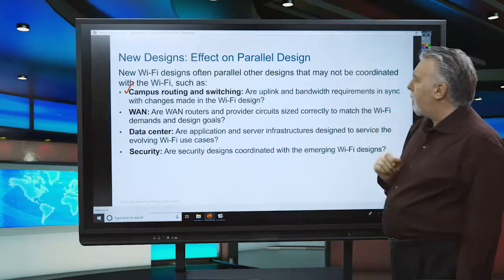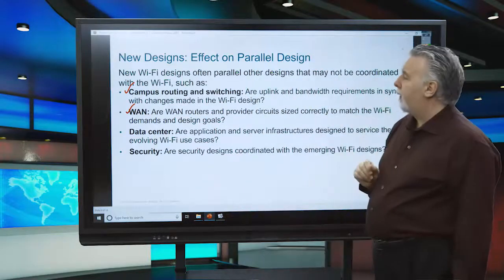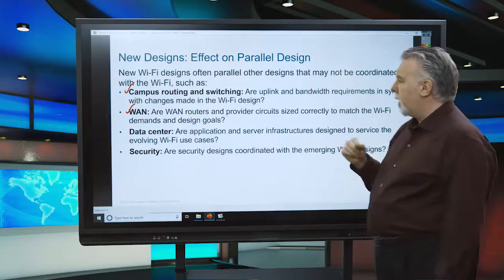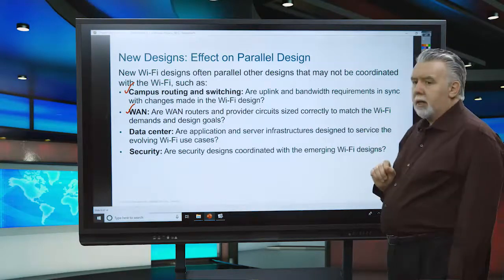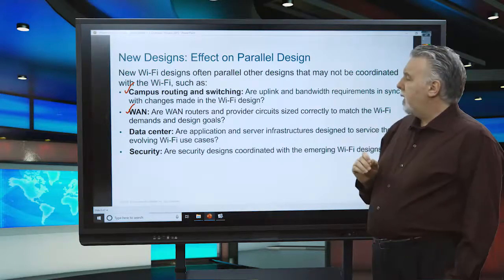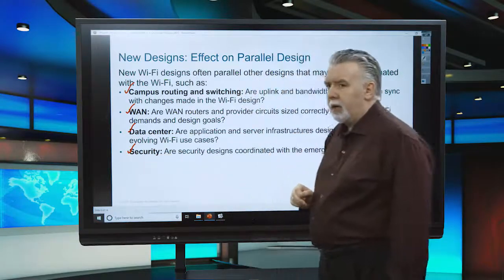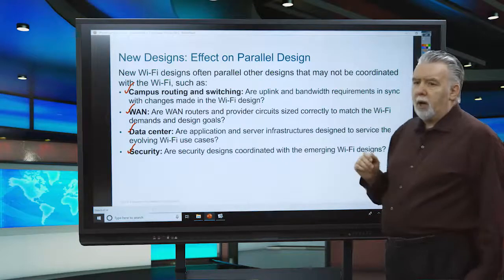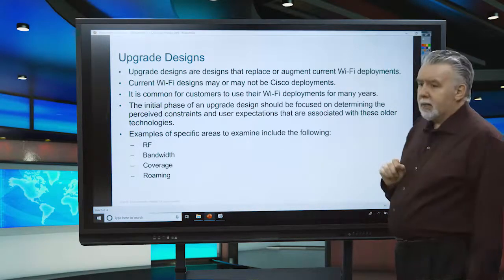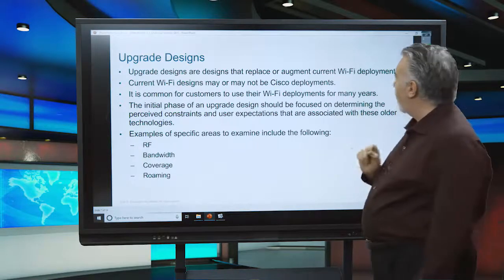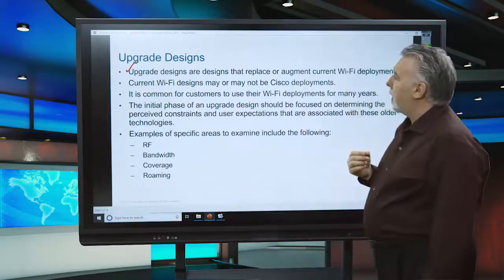Consider what impact the Wi-Fi will have on the campus routing and switching. For example, if you have a remote office with APs but no local wireless LAN controller, how is that going to influence the WAN? Where are you going to put the wireless LAN controllers — in the data center, or in the MDFs or IDFs? That's a very important question to answer. You also have to consider security — not just the wireless security you're going to be using, but the physical security of the devices as well.